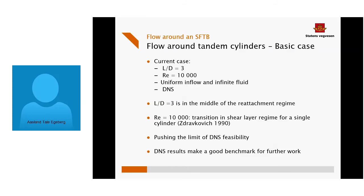The case I've been working on is based on the Bjørnafjord SFTB. I've chosen a gap ratio of three because the Bjørnafjord SFTB has a varying cross-sectional size, meaning the gap ratio would vary somewhere between 2.5 and 3.4, so 3 was the natural choice. Also, gap ratio 3 is right in the middle of the reattachment regime for tandem cylinders, making it hydrodynamically interesting — there is definitely something happening there.